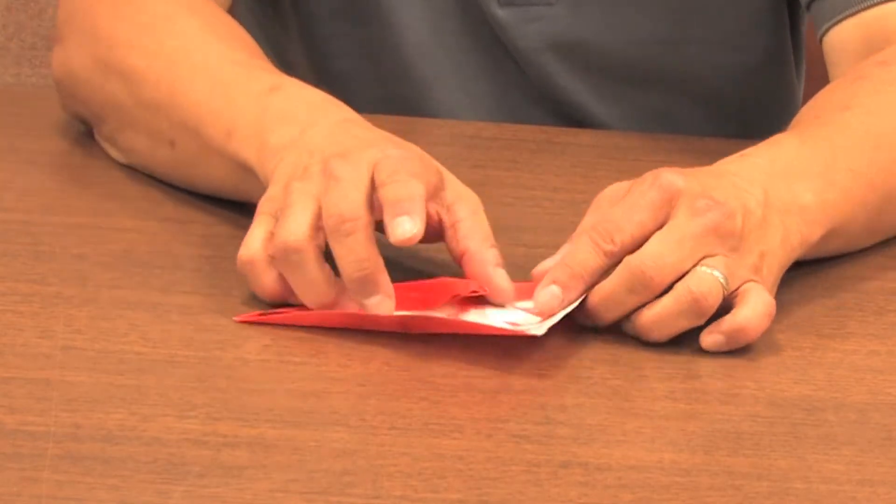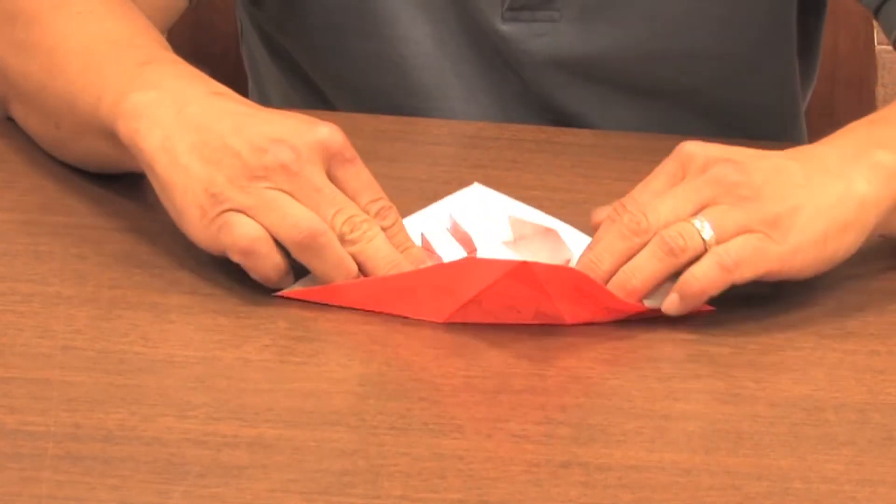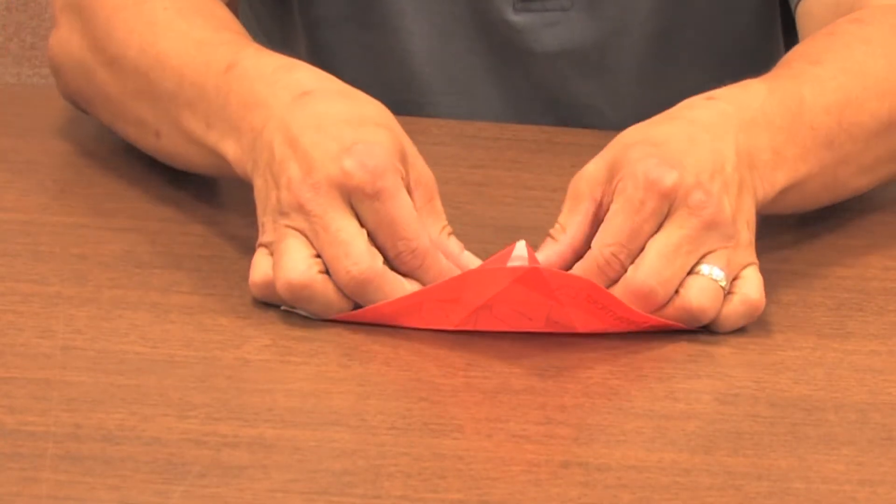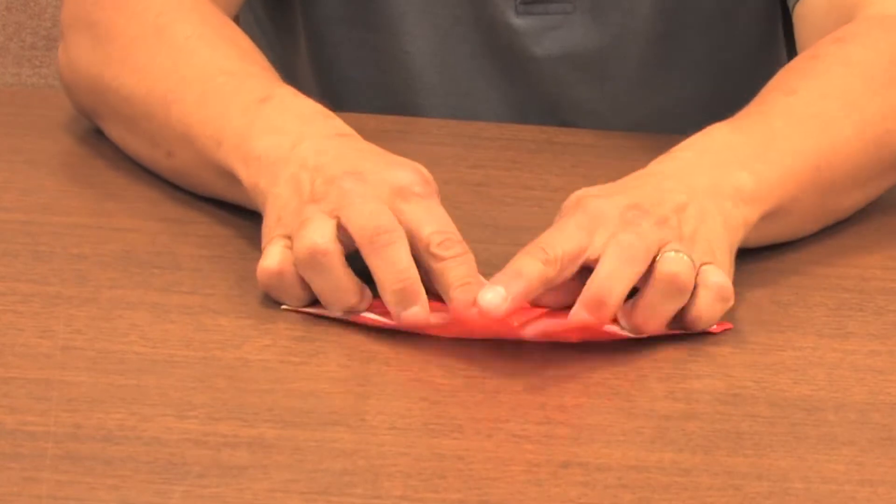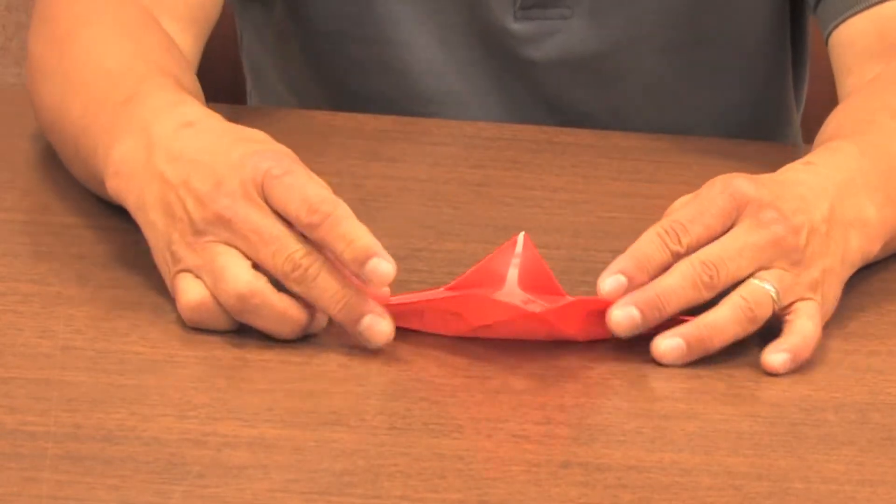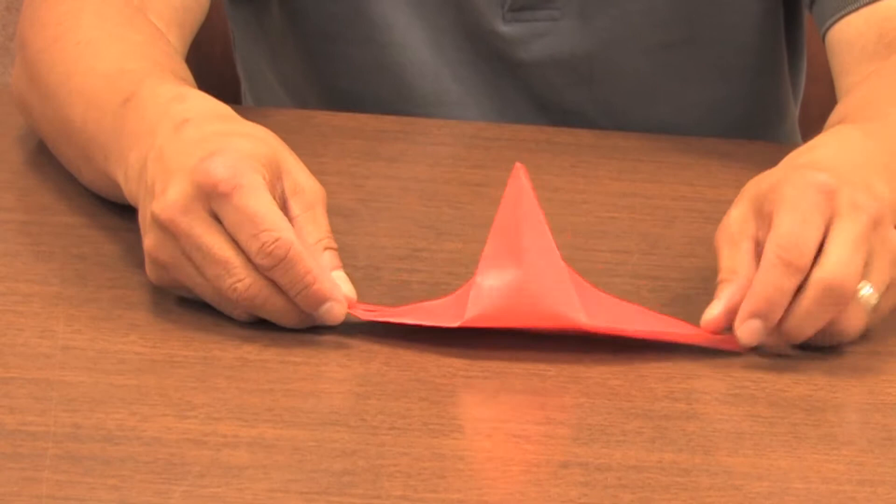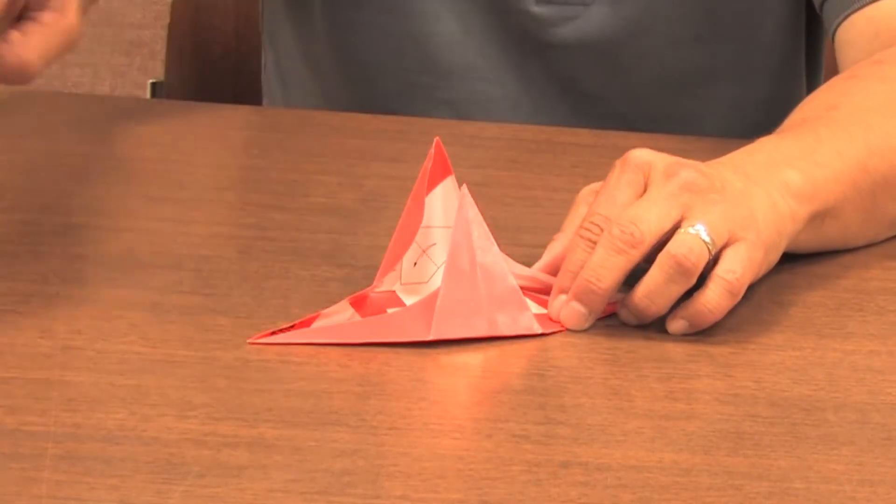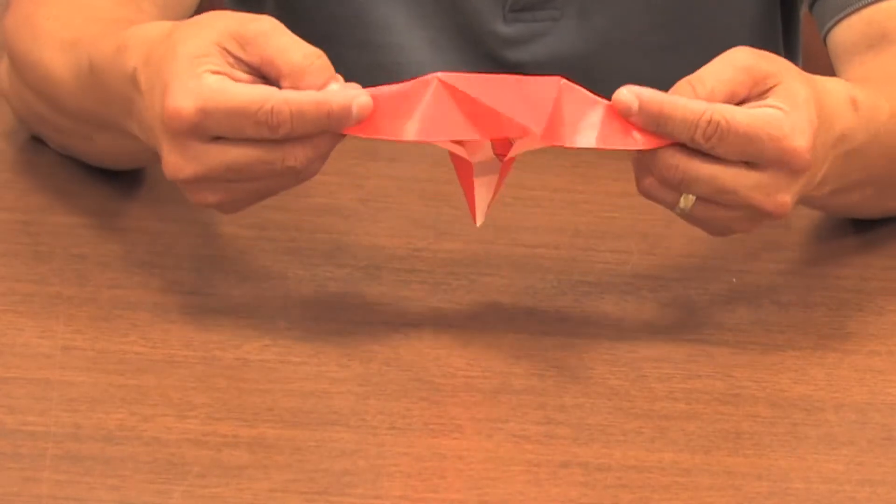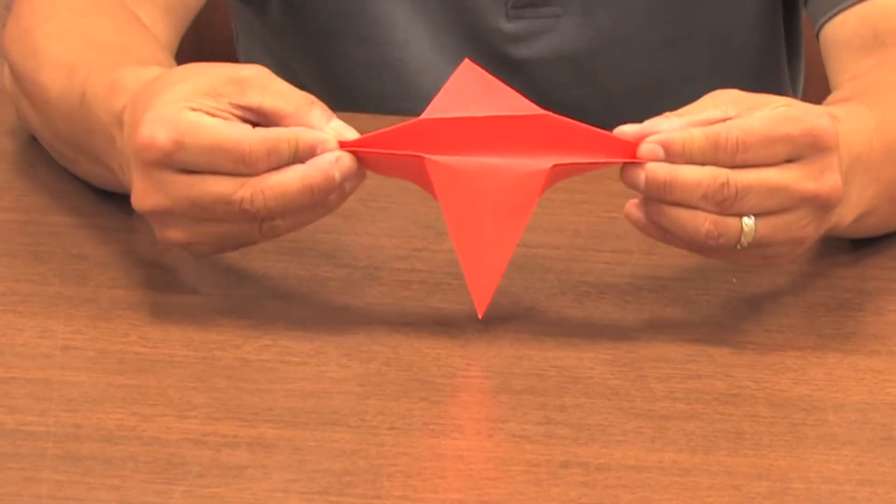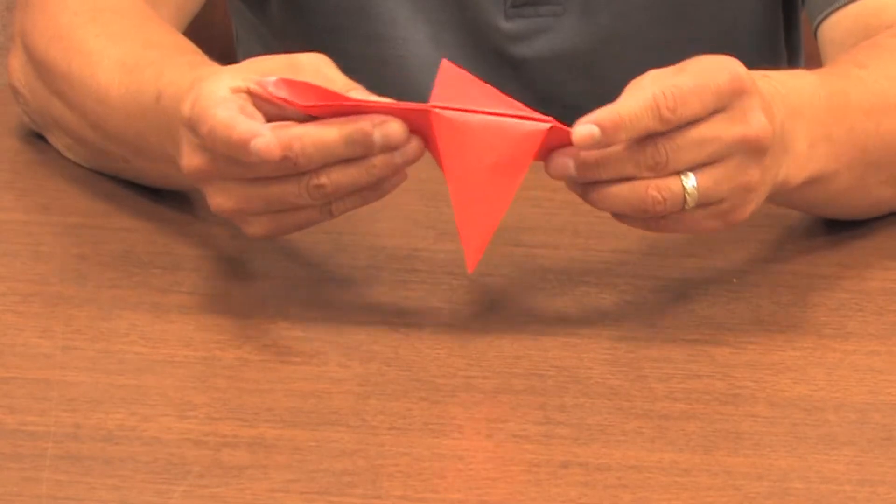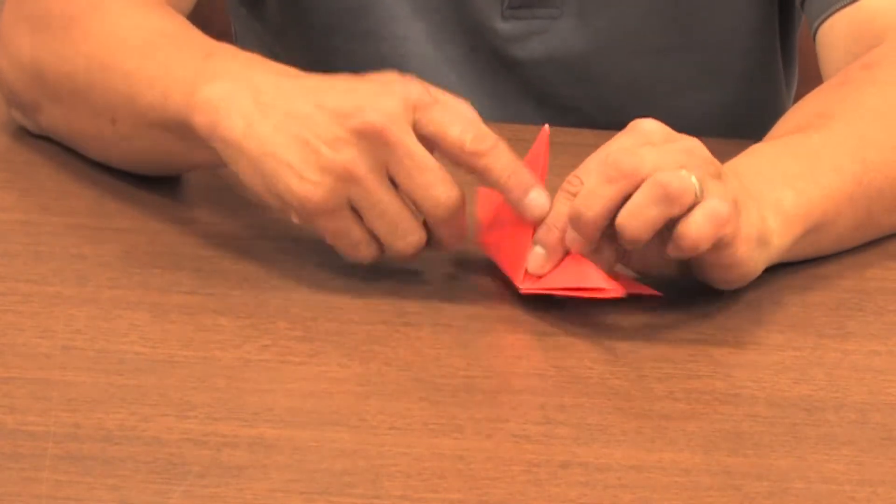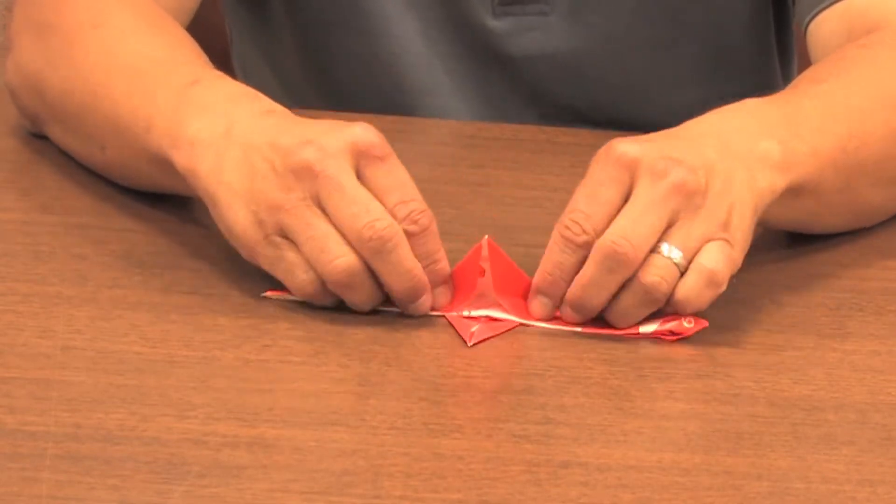We're going to do the same thing on the other side. So bringing it like this so it lies flat. And if we bring these two together, I'm going to fold it in half along this long way like this. Bring these two together and then just flatten everything down.